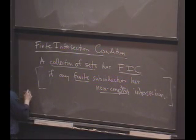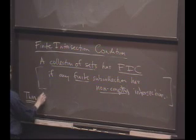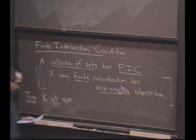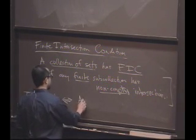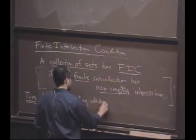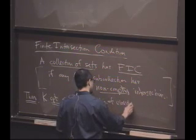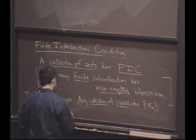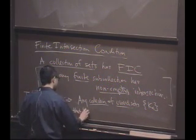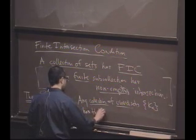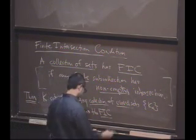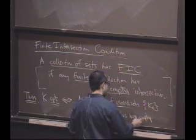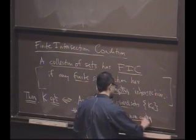And then the characterization of compactness can be expressed as follows. So, there's a theorem which says a set is compact if and only if any collection of closed sets K-alpha, and the way we will say it is that has the finite intersection condition has non-empty intersection. So, this is like what I said before, but I'm just clarifying that the finite intersection condition is just the hypothesis part.